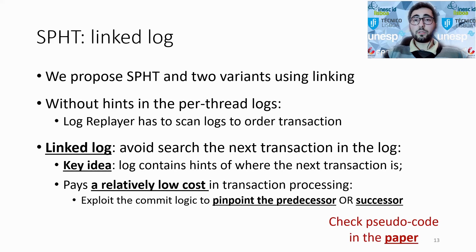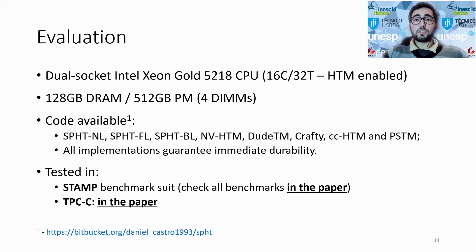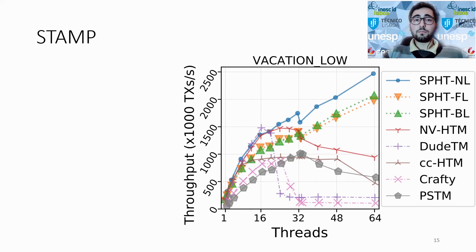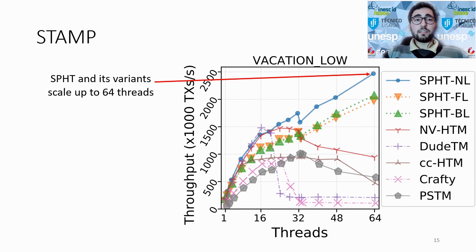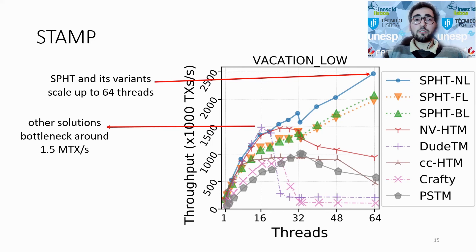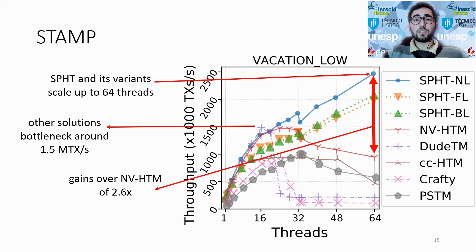We evaluate SPHT with and without linked log, and five other solutions, in a system equipped with an HTM-enabled CPU and 512GB of PM. The SPHT source code and benchmarks are available at the link below. For fairness, all designs are implemented in a common framework and all provide immediate durability. The Vacation benchmark implements an online transaction processing system emulating a travel reservation system. The graph shows throughput for a given number of concurrent threads. Vacation low is a scalable workload for HTM transactions, and in this scenario SPHT can scale up to 64 threads, with a throughput 2.6 times larger than NBHTM at 64 threads.